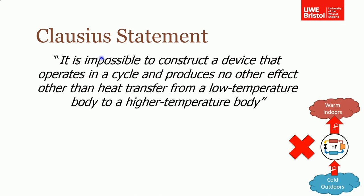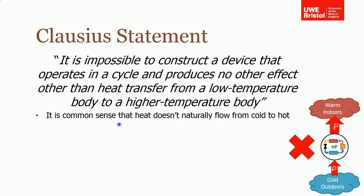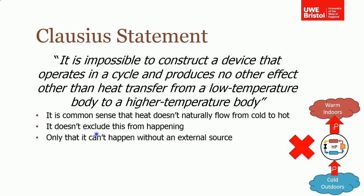This brings us on to the next statement, which is the Clausius statement. The Clausius statement states that it is impossible to construct a device that operates in a cycle and produces no other effect other than heat transfer from a low temperature body to a high temperature body. What he's said is what we kind of know already — that heat won't just flow from a cold space to a warm space unless some work is inputted into the system. This statement doesn't exclude it from happening; it's just saying it can't happen without an external source, without some work being put in.